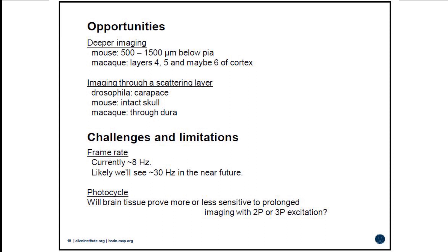If you want to build in adaptive optics, you need to go a step further — your galvanometers need to be conjugate with each other and with the back aperture of the objective. I've heard people say you have to have adaptive optics to do three-photon excitation, and it just isn't true. Most of what I've shown today was done without adaptive optics. There's good reason to add it, but we've had very good results without resorting to adaptive optics.